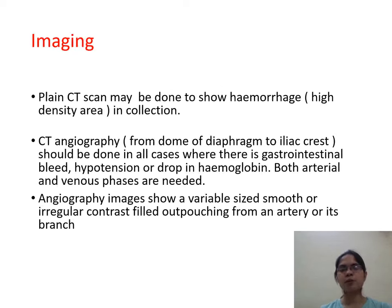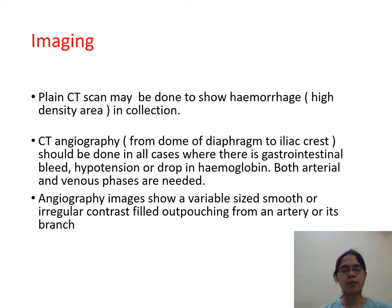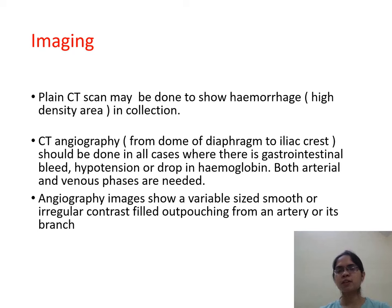Imaging: Plain CT scan may be done to show hemorrhage, high density area, and collection. CT angiography from dome of diaphragm to iliac crest should be done in all cases where there is gastrointestinal bleed, hypotension, or drop in hemoglobin. Both arterial and venous phases are needed. Angiography images show a variable size smooth or irregular contrast outpouching from an artery or its branch.